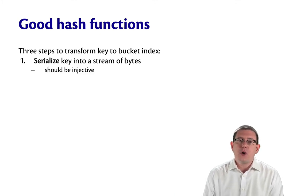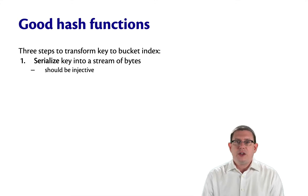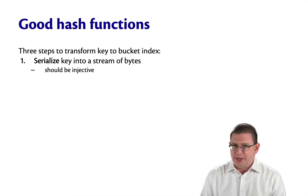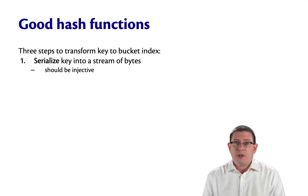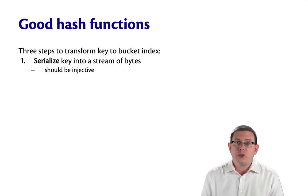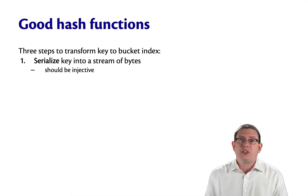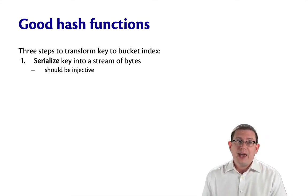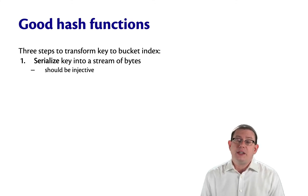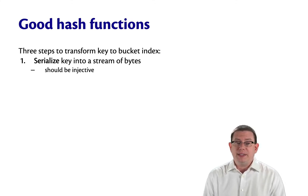The first step is to transform the key into some kind of stream of bytes. This is called serialization. Serialization is a problem that occurs not just in hash functions, but when you want to convert some representation of a value in memory and store it onto a disk — you have to serialize it into a stream of bytes at that point.